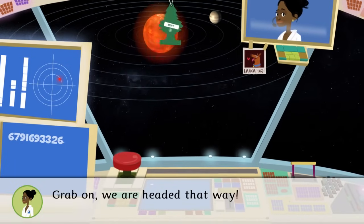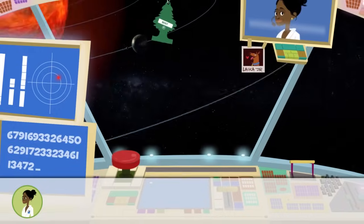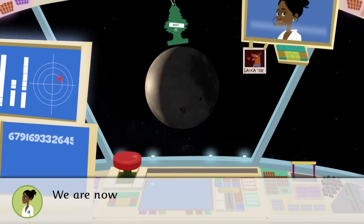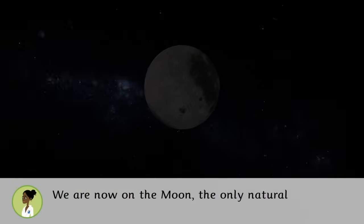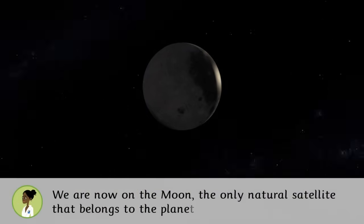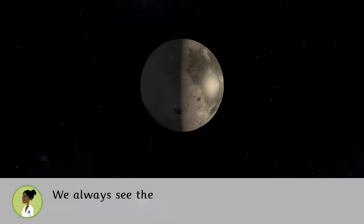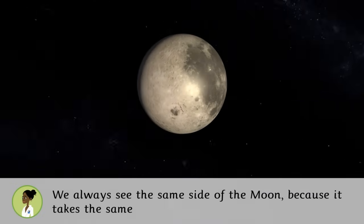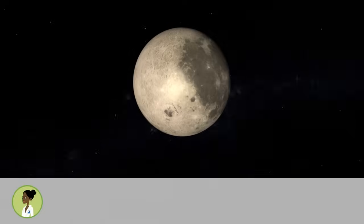We are now on the Moon, the only natural satellite that belongs to the planet Earth. We always see the same side of the Moon because it takes the same amount of time to rotate around itself as it does to orbit the Earth.